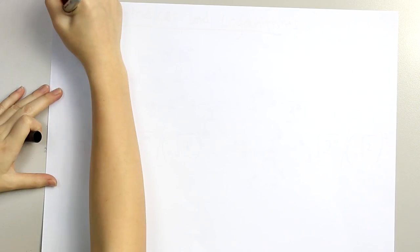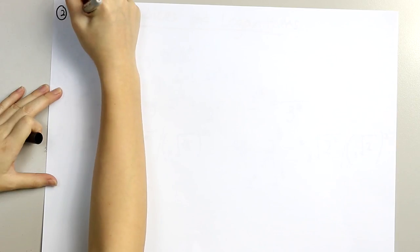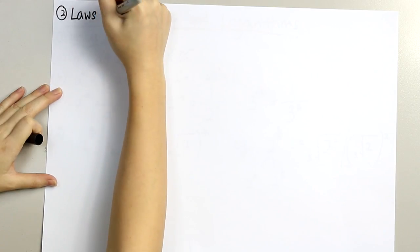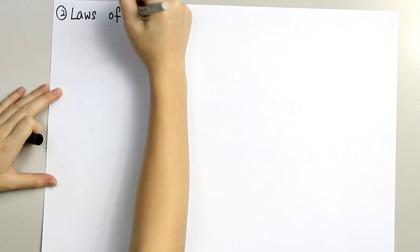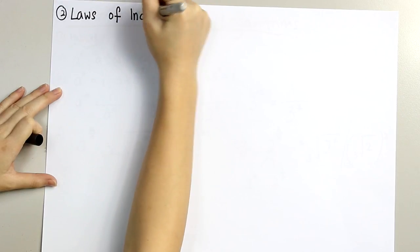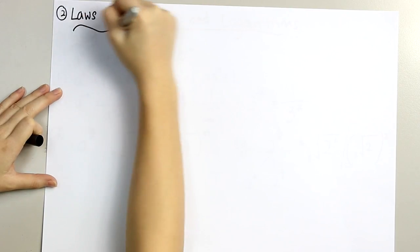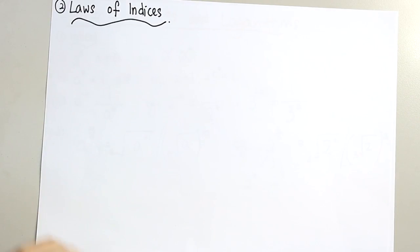Next, we'll go to laws of indices. There are five laws for indices, and we're going to go through them one by one.